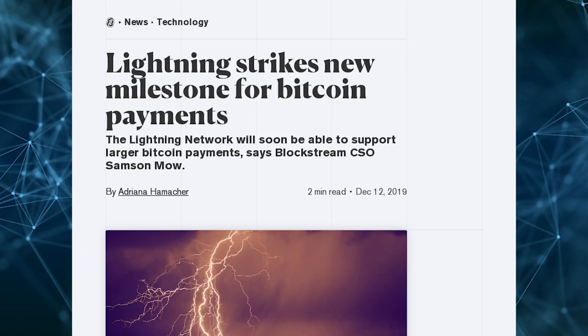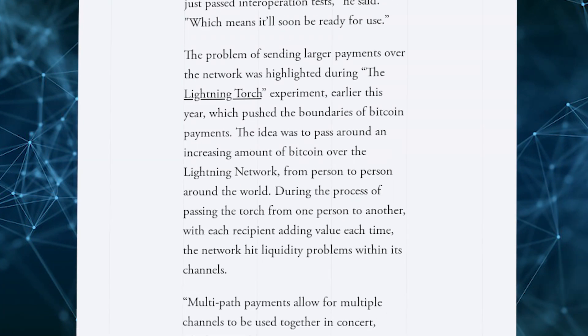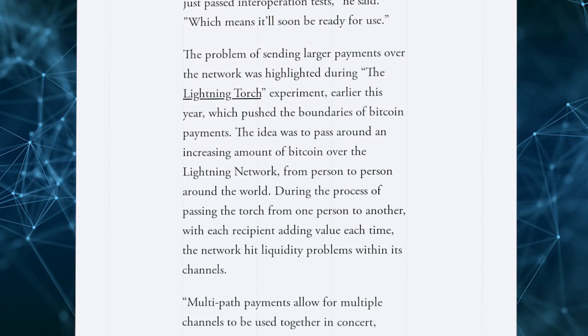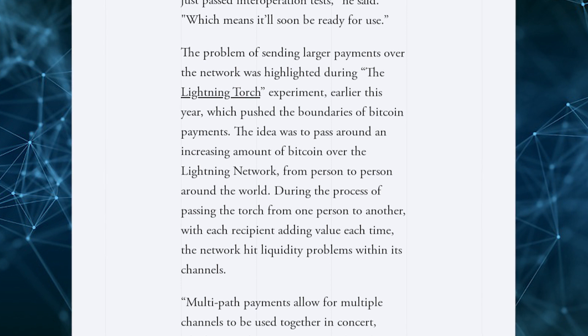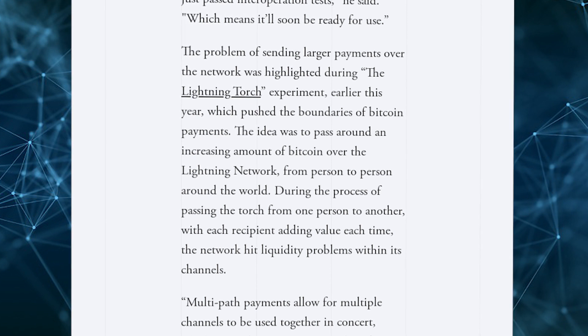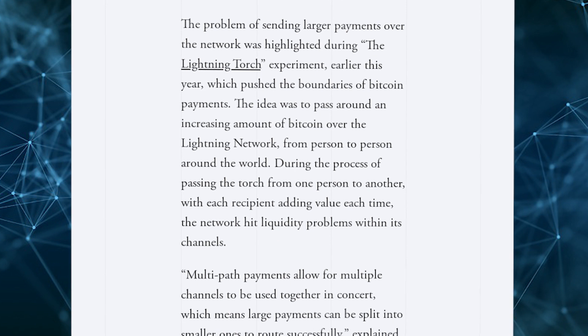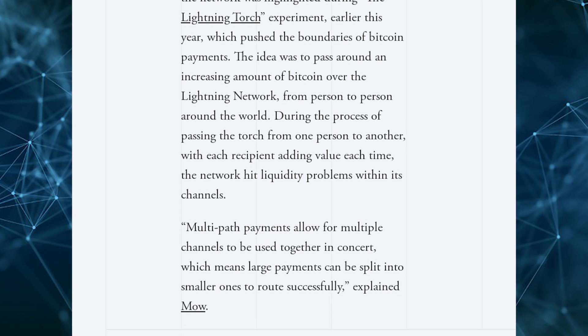A great example is the 2019 Lightning Network torch relay on Twitter, where participants had to split payments into a few separate ones manually due to routing and capacity problems. In the 2020 edition, a year later, due to the usage of multipath payments, the manual splitting wasn't necessary anymore.